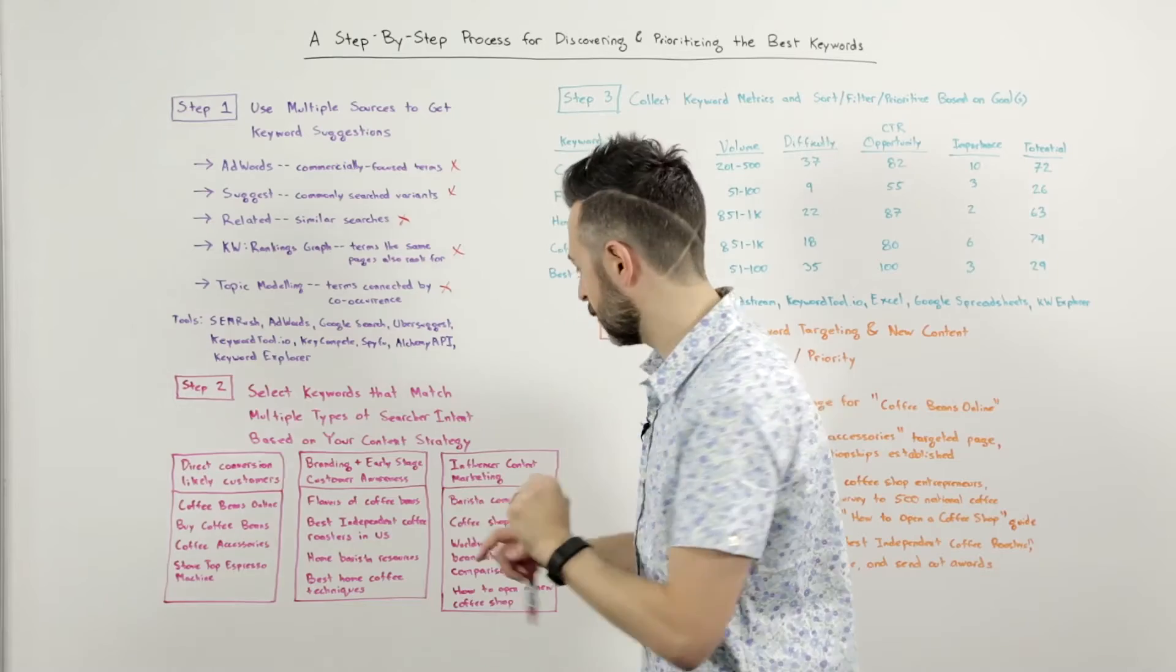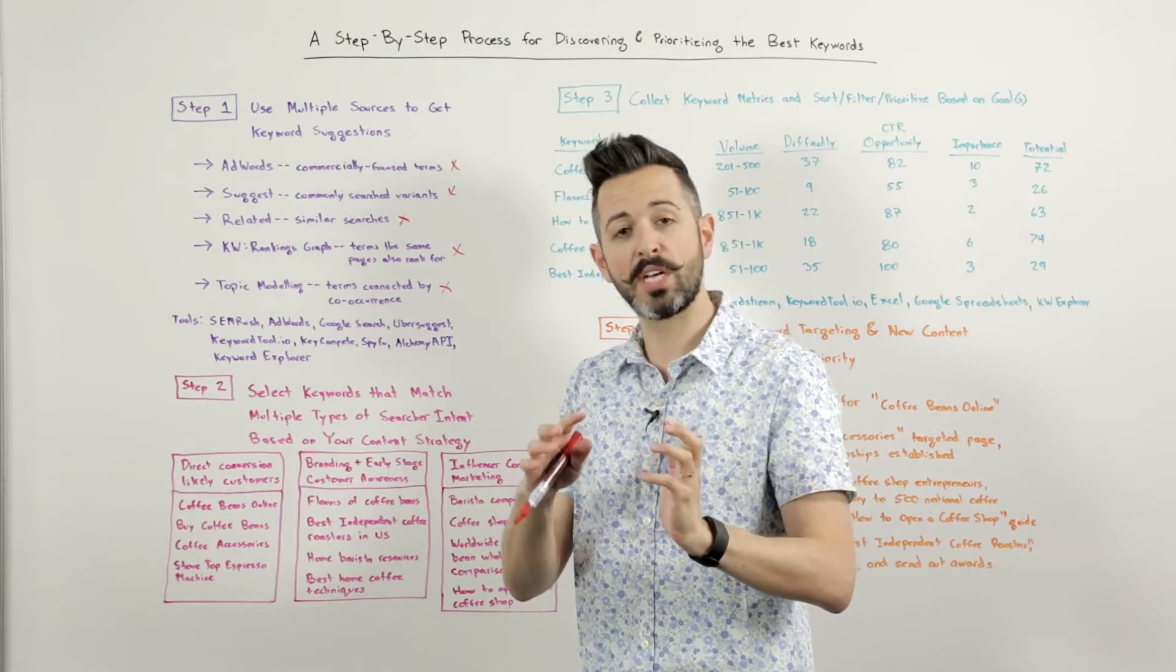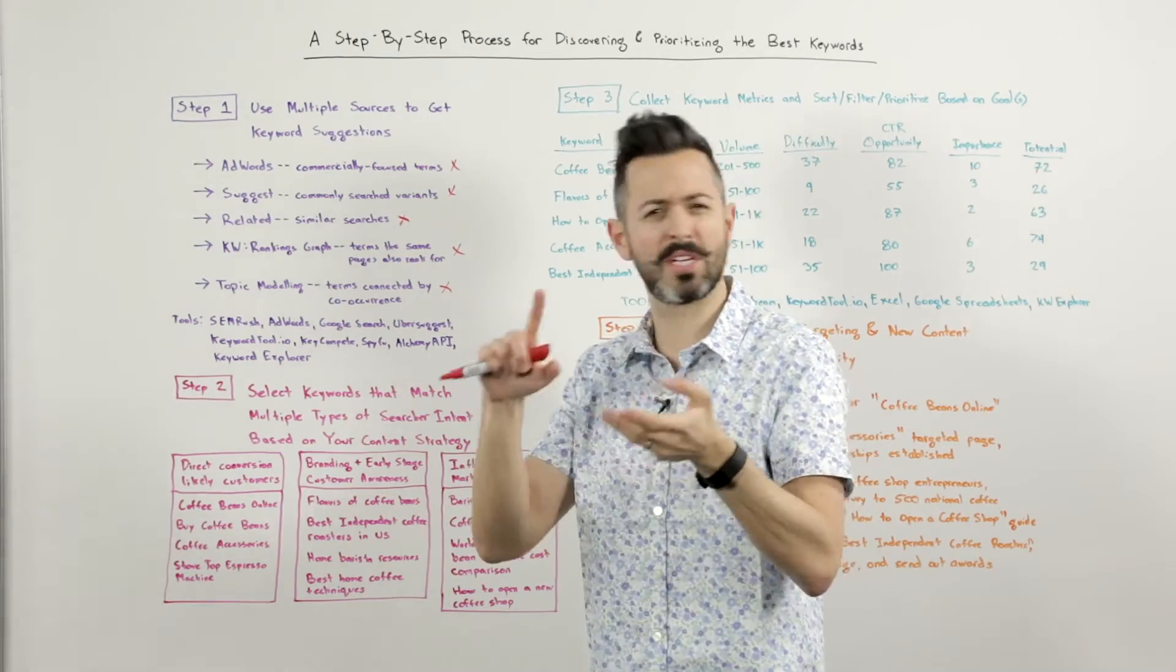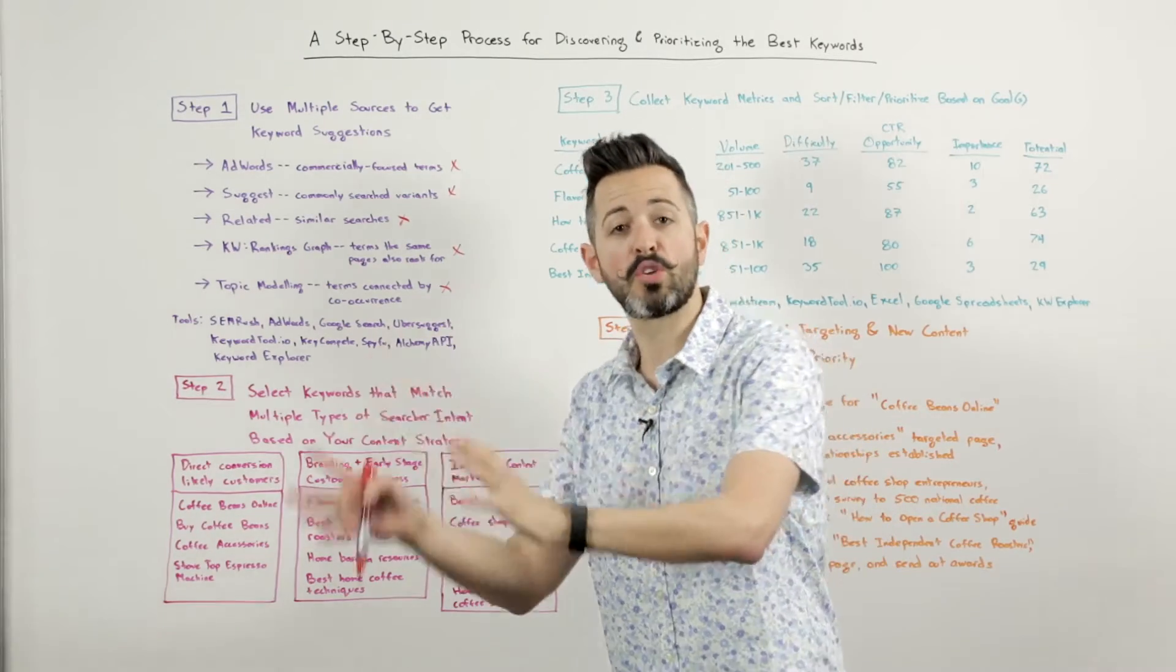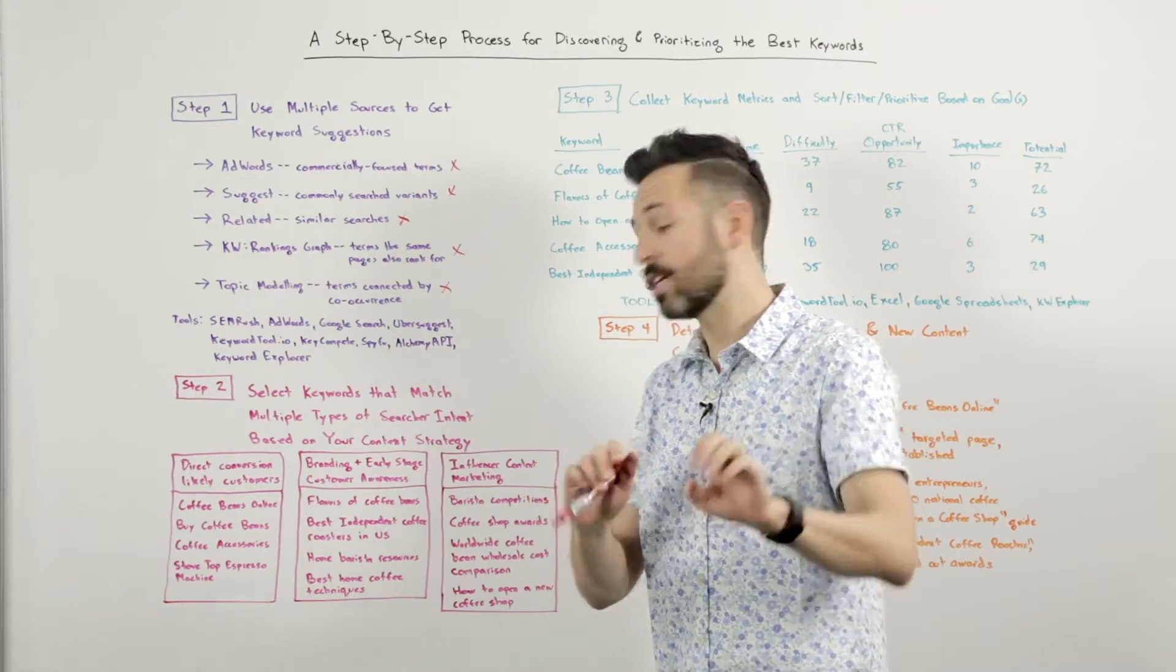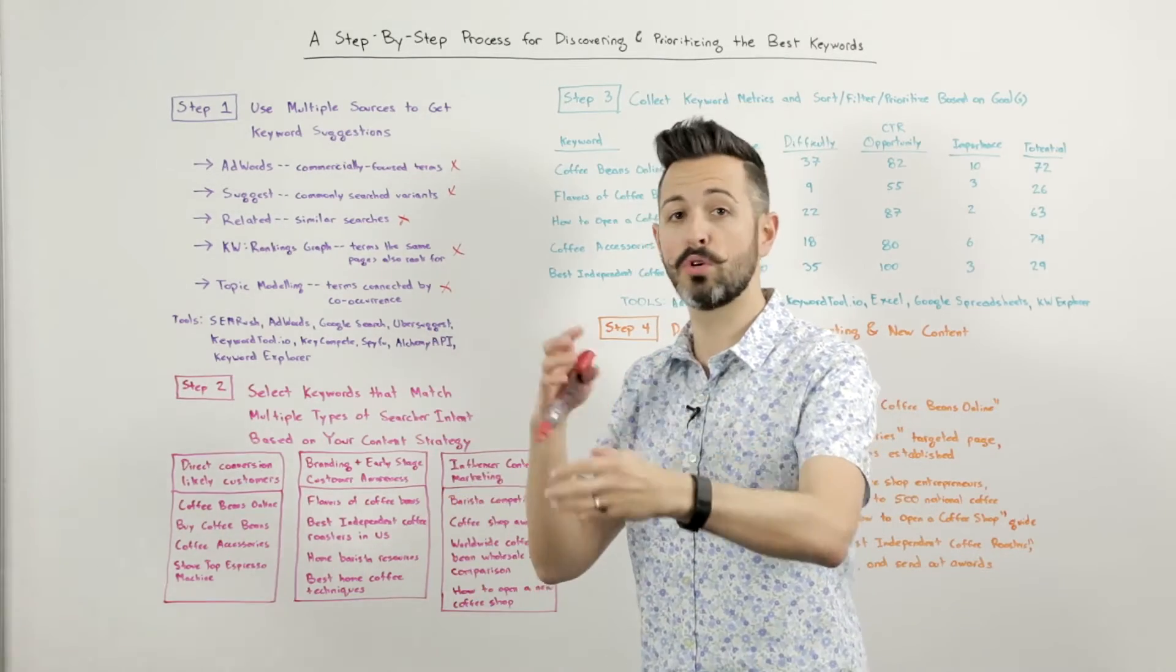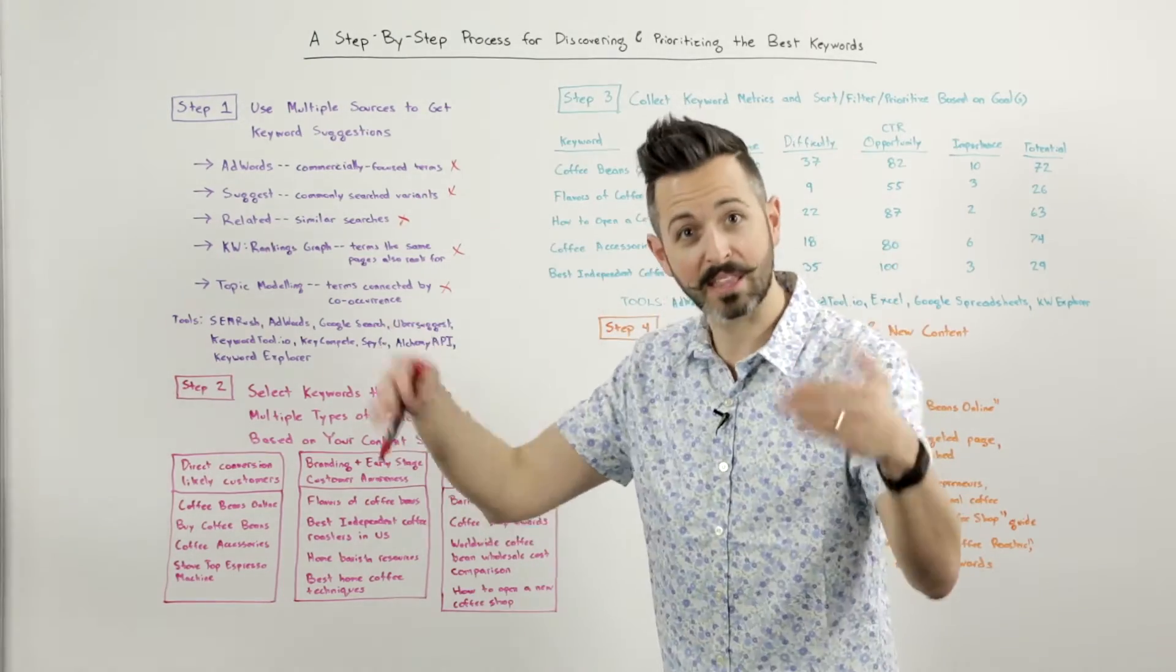And then I might in my content strategy have some idea that, hey, I also want to target coffee influencers, people who are influential in this world. Could be journalists and bloggers and people who write for magazines and folks who are very popular on Twitter or Facebook or have popular Instagram accounts. I want them to be aware of us. And so I might go after things like barista competitions. Barista competitions, if I have a big list of those, well, lots of baristas and folks who run coffee shops are going to be looking for that. I can influence them, get in their head, get them to know my brand.